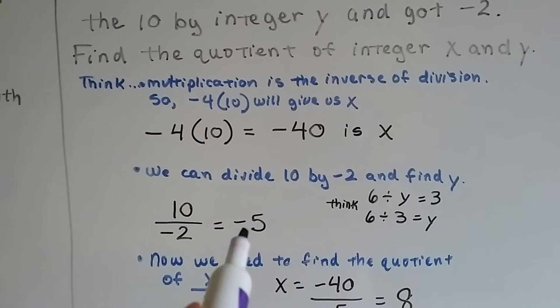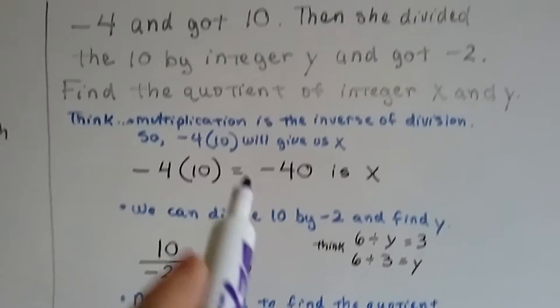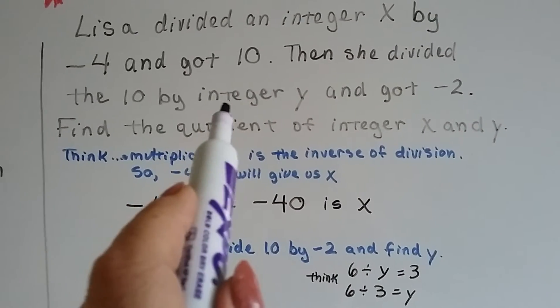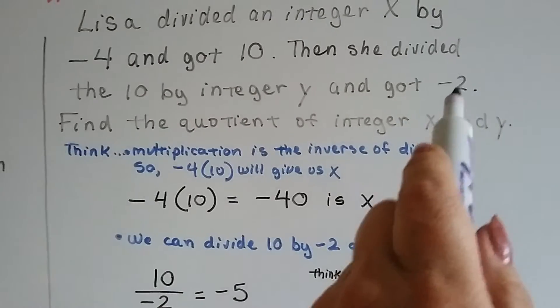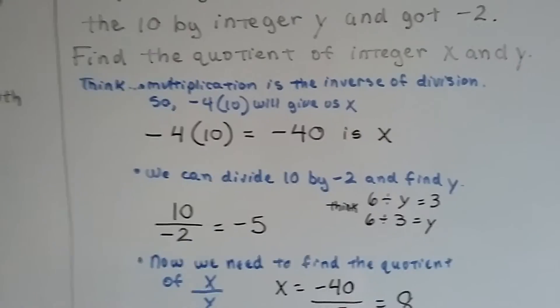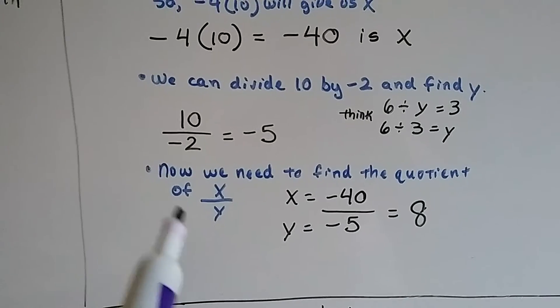So if we're doing 10 divided by negative 2, we're going to get a negative 5 because they're unlike signs. We know that it would have been 10 divided by negative 5 as the integer y because we divided it by the 2 instead and got that as the quotient. We flipped it around, so now we know that y is negative 5.